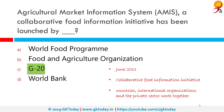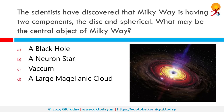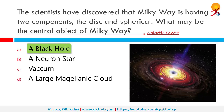Scientists have discovered that the Milky Way has two components: the disk and spherical. What may be the central object of the Milky Way? The central area of the Milky Way is known as the galactic center. The galactic center is the rotational center of the Milky Way. There is a supermassive black hole of 4.1 ± 0.034 million solar masses at the galactic center, which powers the Sagittarius A* radio source.